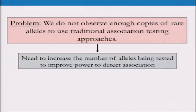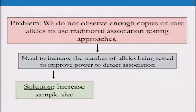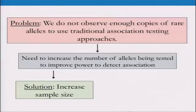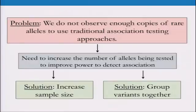We need to aggregate things together to improve our statistical power to detect association. One very easy way is to sequence more samples. With that schizophrenia GWAS, when they had 2,600 people they didn't find anything, but when you add 5,000 or 10,000 more, we pull things out. Unfortunately, this isn't always feasible — sequencing is really expensive. So another way to approach it is to group these rare variants together and aggregate them all somehow.